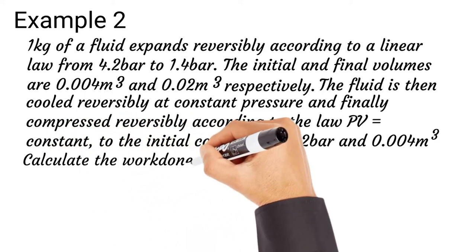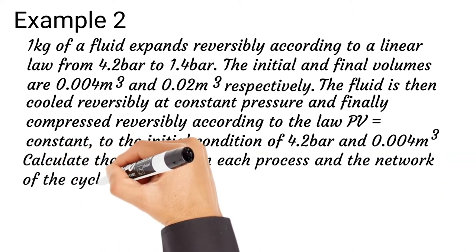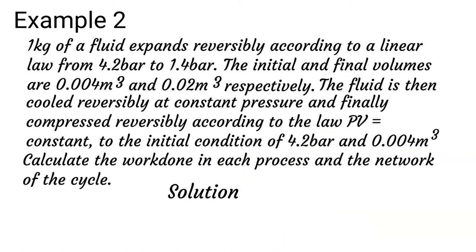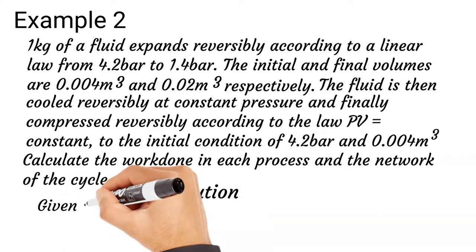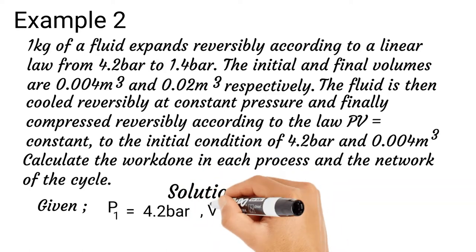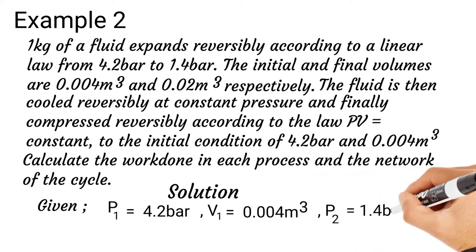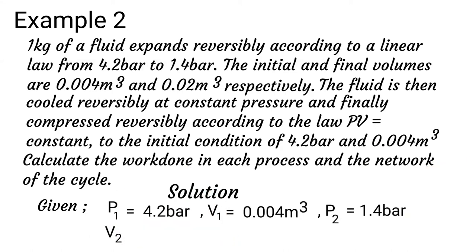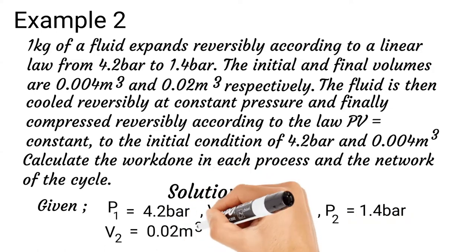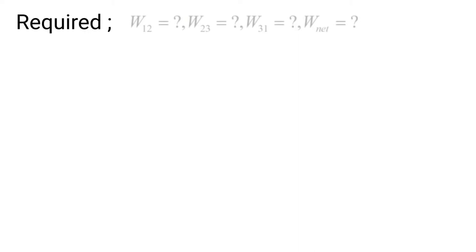Calculate the work done in each process and the net work of the cycle. Given: P1 = 4.2 bar, V1 = 0.04 m³, P2 = 1.4 bar, V2 = 0.02 m³. We are looking for the work in process 1→2, the work in process 2→3, the work in process 3→1, and the net or total work of the cycle.